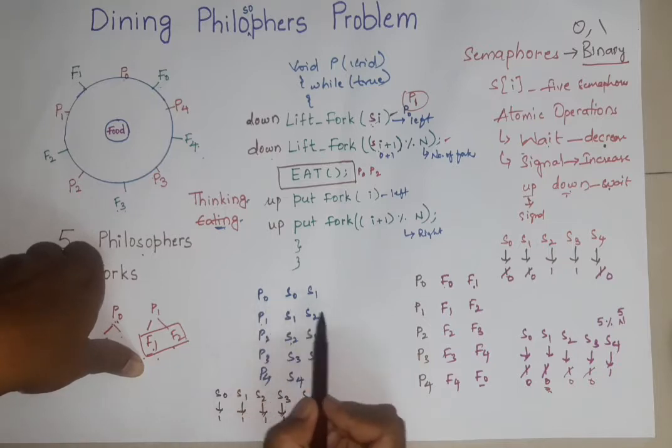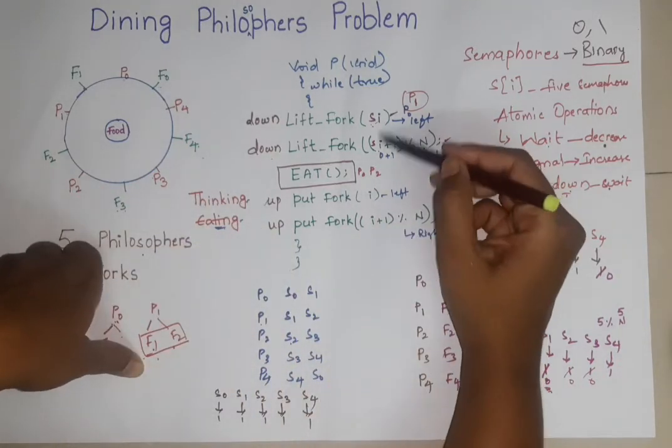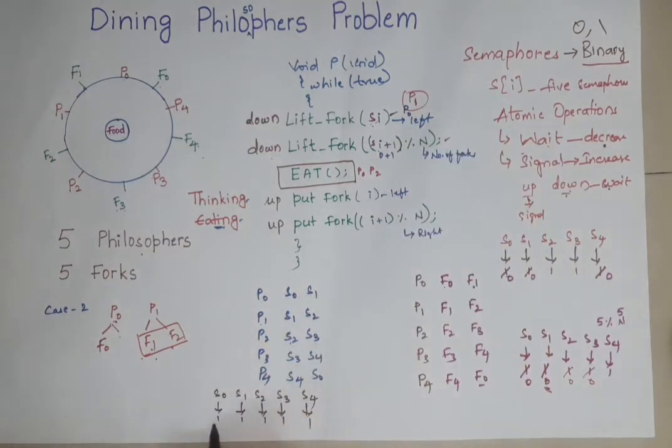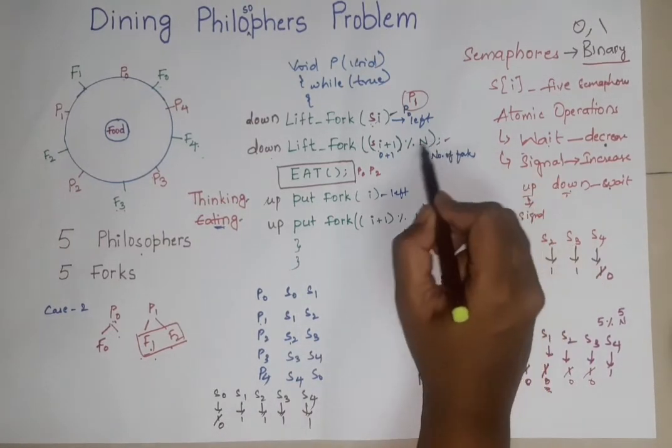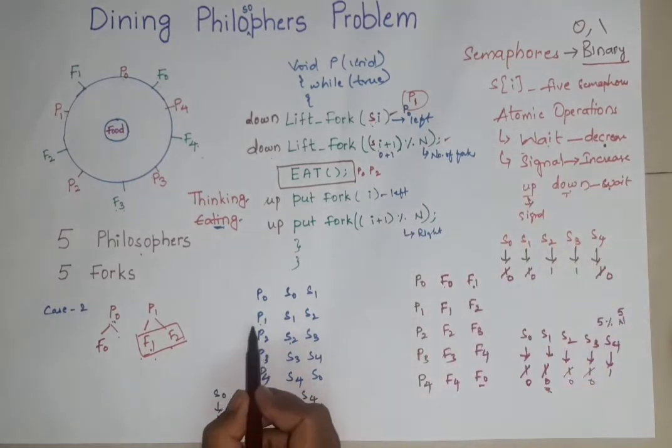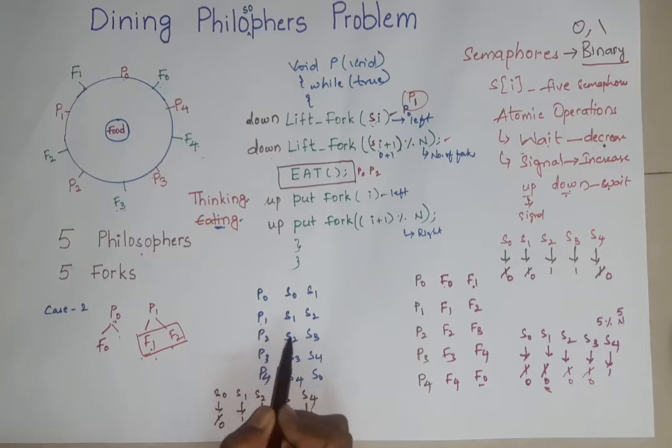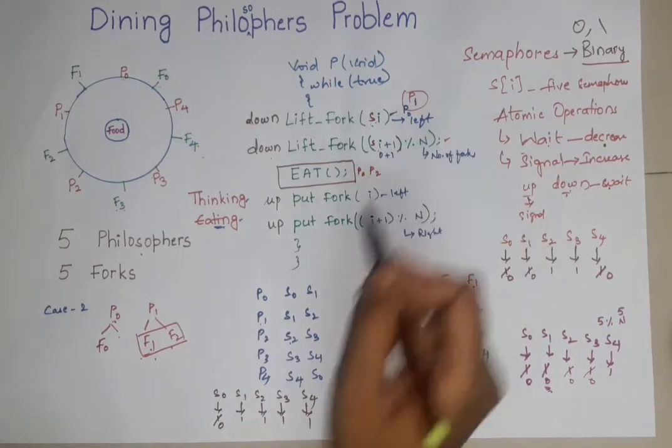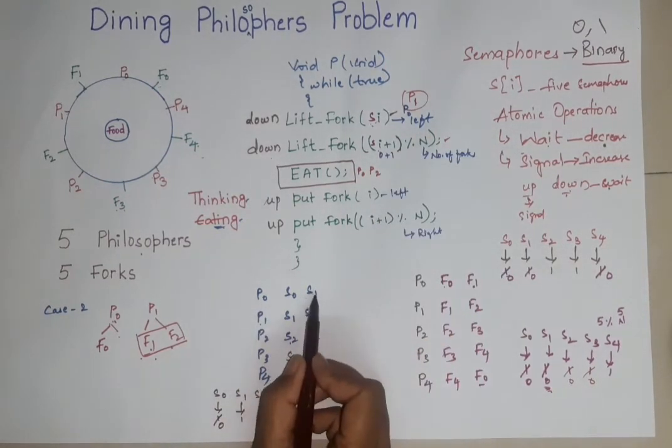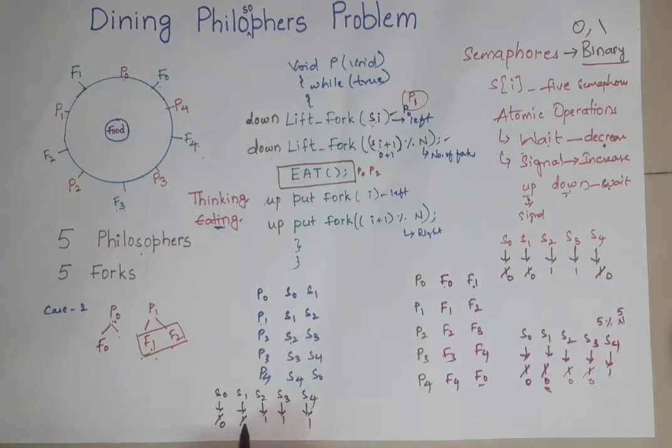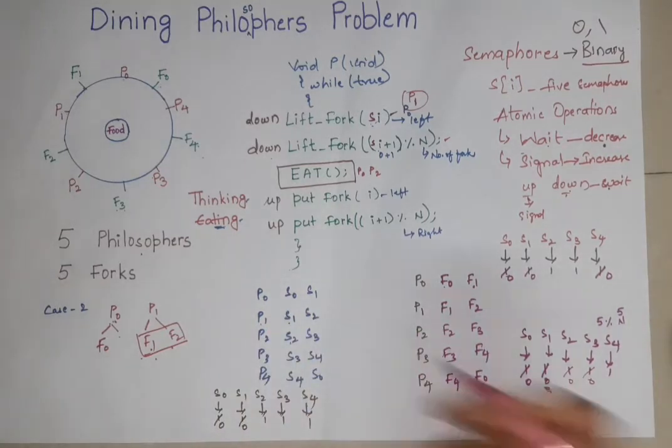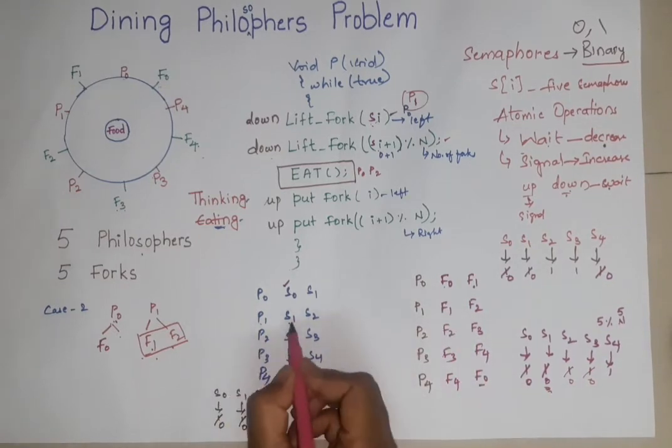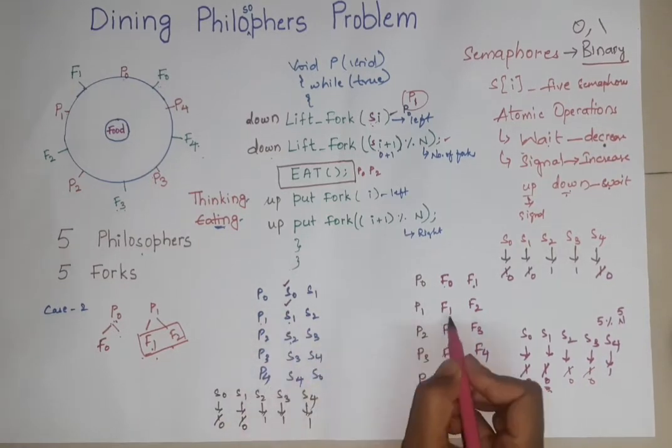Now if P0 wants to take F0 and F1, then he needs to down these two values. P0 has performed this down operation and taken F0, and he is about to perform this second instruction but at that time only P1 came. P1 also executed this instruction. As P0 has not executed this instruction, he can easily down this value and P1 can take the S1. Now P0 has taken S0 that is F0 and P1 has taken S1 that is F1.